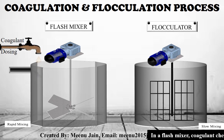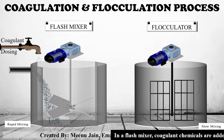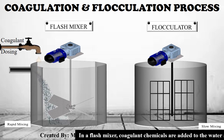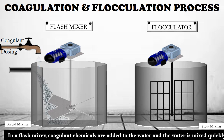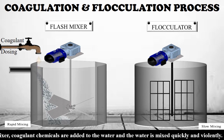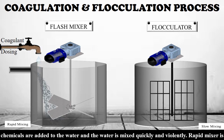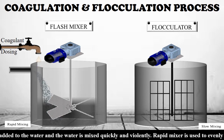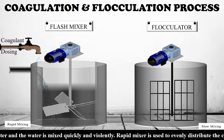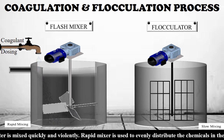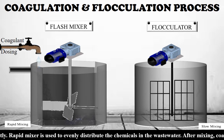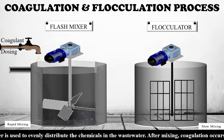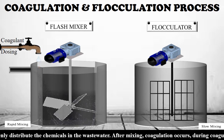In a flash mixture, coagulant chemicals are added to water and the water is mixed quickly and violently. A rapid mixer is used to evenly distribute the chemicals in wastewater. After mixing, coagulation occurs.